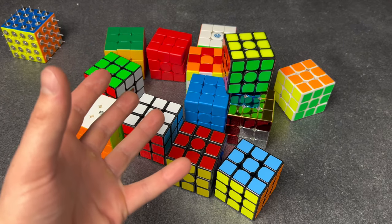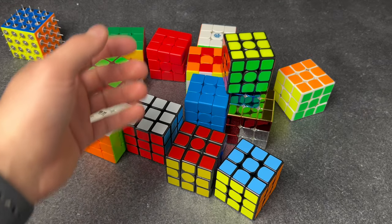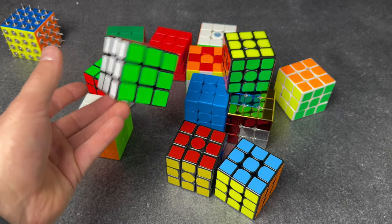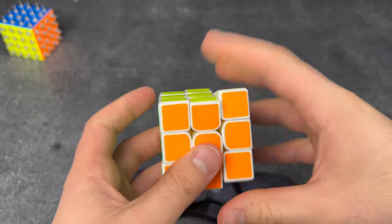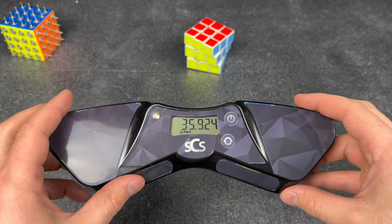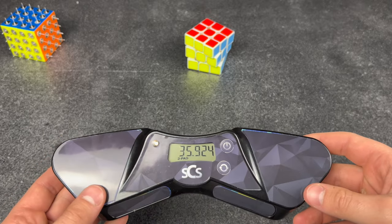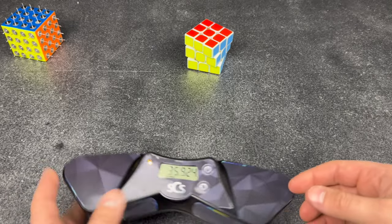So how the heck am I supposed to pick a main if all of these cubes are good? I don't get it. Making excuses for bad solves. Oh crap, I mean it was a hard solve. I don't know, whoever scrambled that is really good at scrambling, that's all I've got to say.